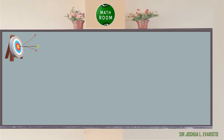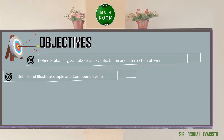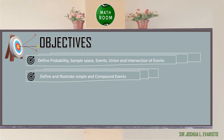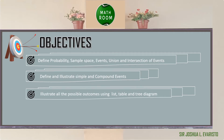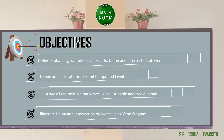Before we proceed on our discussion, let me present to you our objectives. At the end of this lesson, you should be able to: define probability, sample space, events, union, and intersection of events; define and illustrate simple and compound events; illustrate all the possible outcomes using list, table, and tree diagram; and illustrate union and intersection of events using Venn diagram.